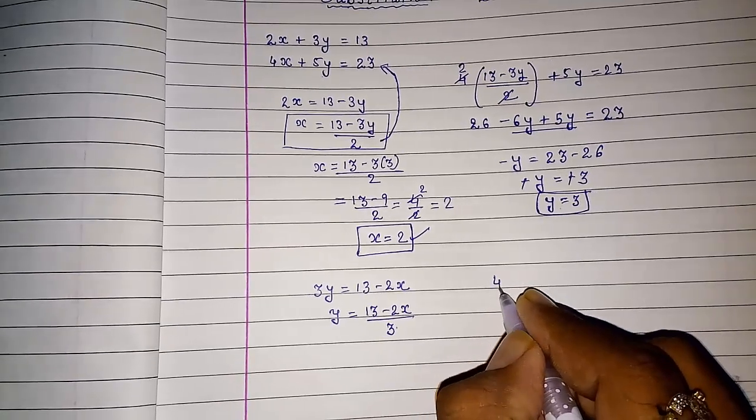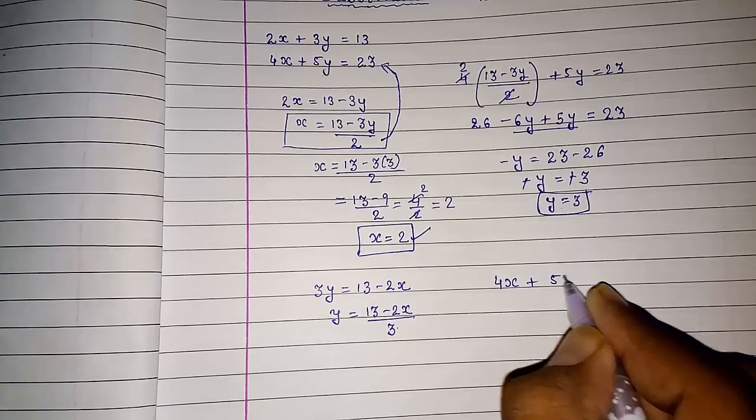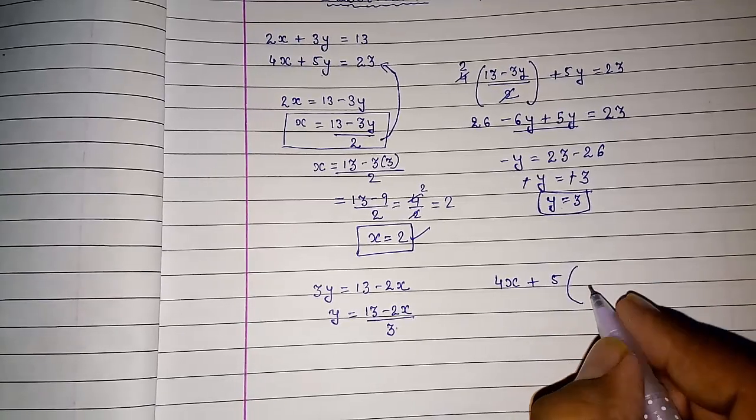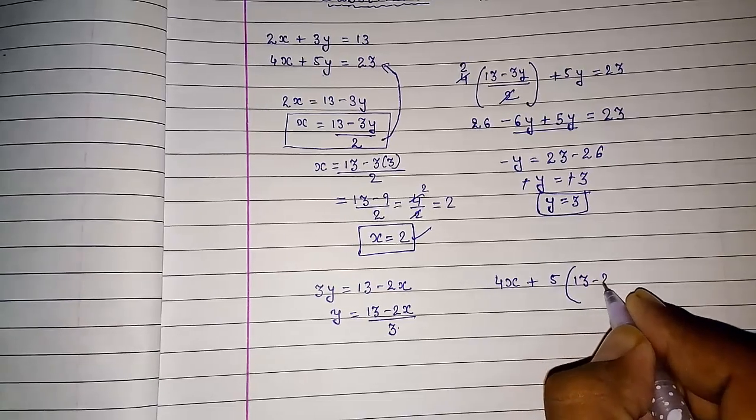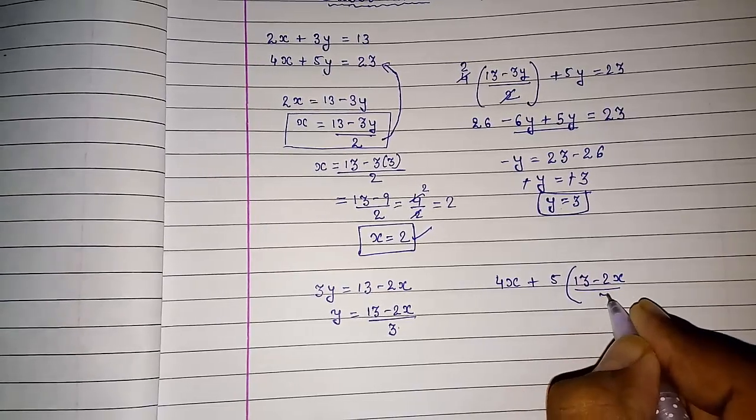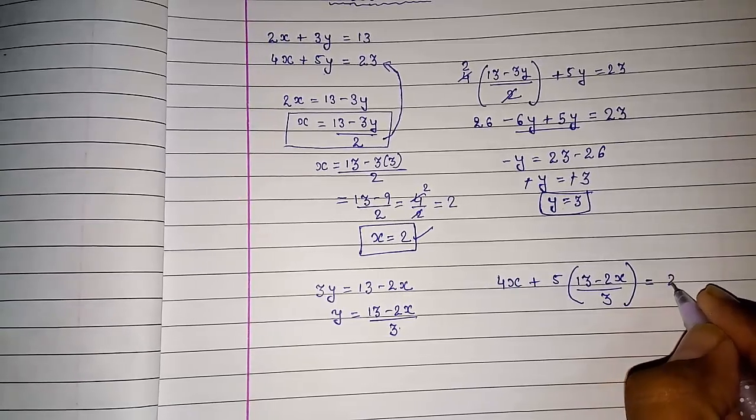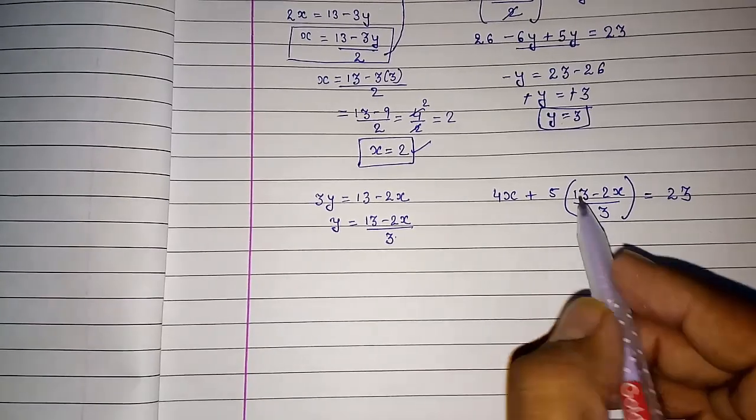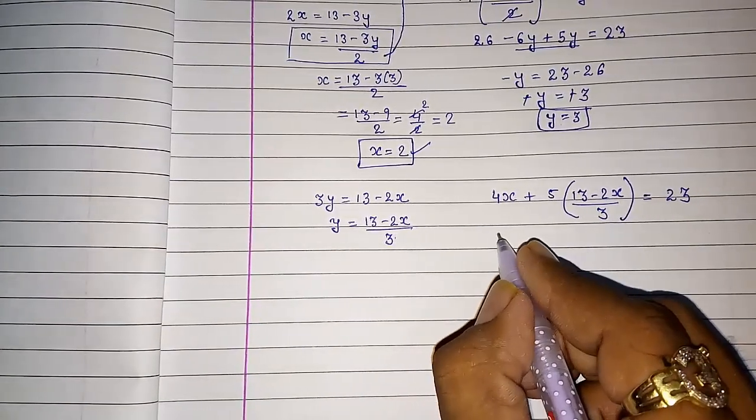So we know it's 4x + 5y = 23. Now the problem arises here. Generally students are making mistakes here only. They don't know what to do now and are making mistakes.